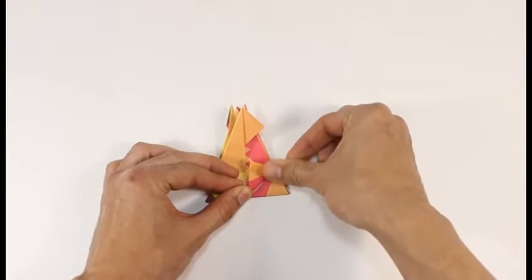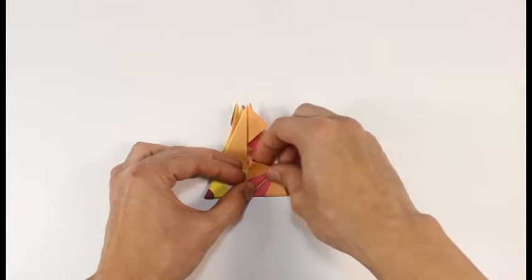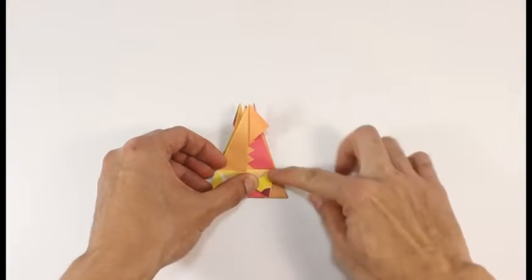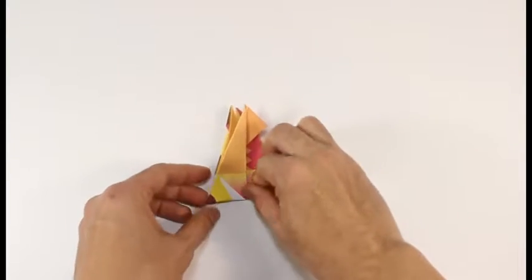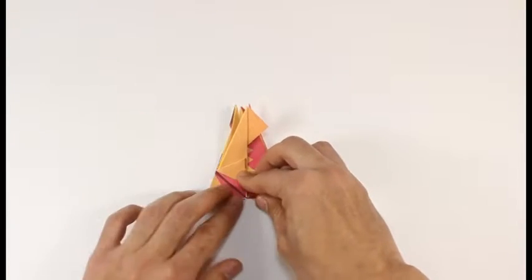Fold the bottom edge to the center line. Fold it down from the back corner so that it lines up with the bottom edge. Repeat on the other side.